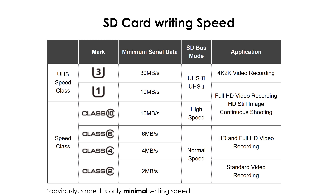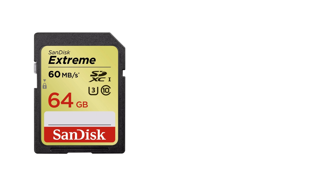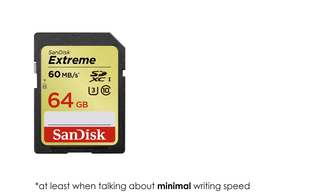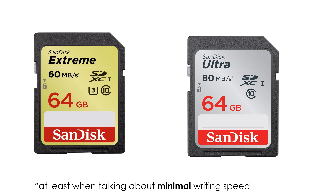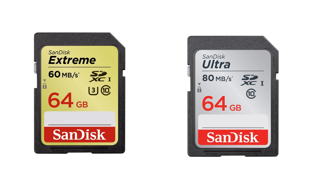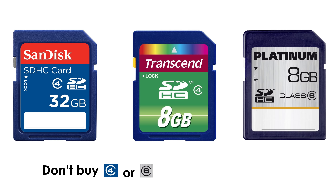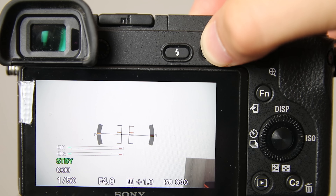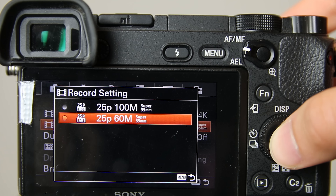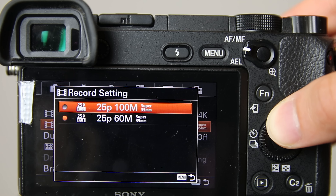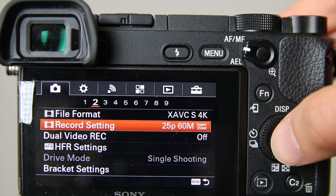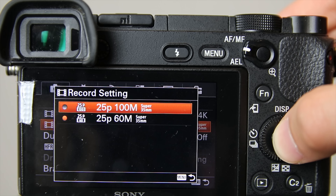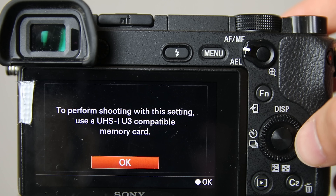But actually I have a U1 card and it still works. An interesting comparison: this 60 megabyte per second card is 3 times faster than this 80 megabyte per second card. So please don't get fooled by the reading speed. Definitely never buy a card below Class 10, because Class 10 is already so cheap. On my Sony a6300 I can record 4K with 60 megabit per second with the U1 card, but for the 100 megabyte per second option I have to use a U3 card.